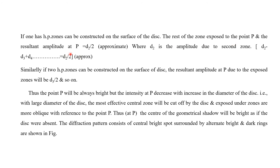The resultant amplitude at P is equal to D2 divided by 2, approximately. This is the total amplitude when one half-period zone is covered by the disk. The second zone amplitude is D2, and the first zone is at the center. The total resultant amplitude is D2 minus D3 plus D4, which is approximately D2 by 2.